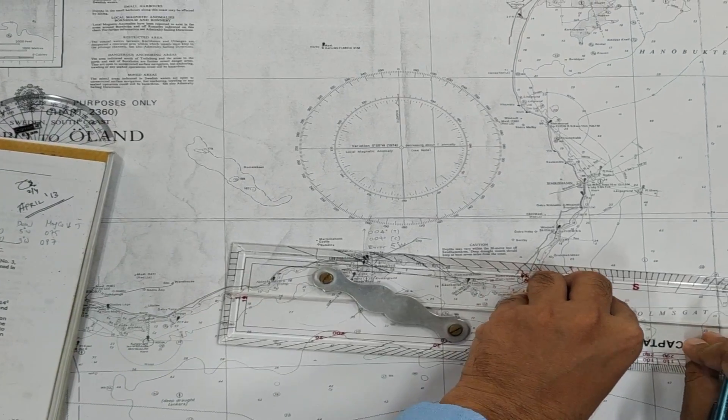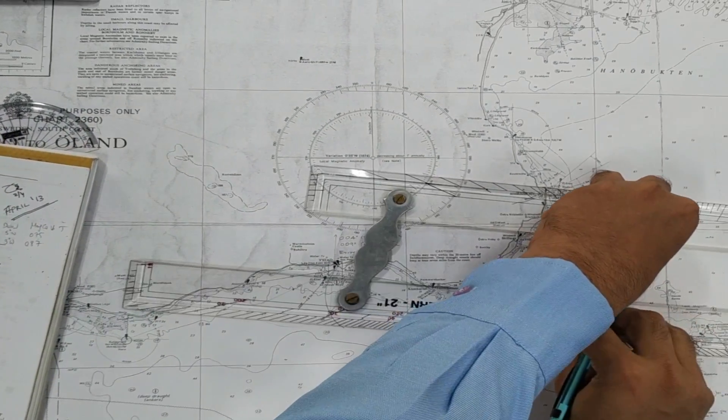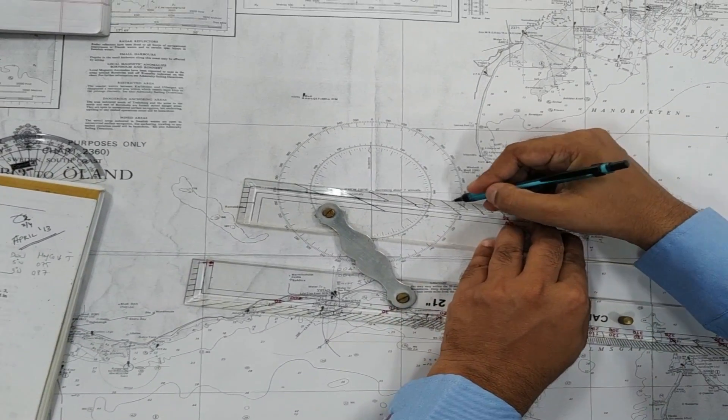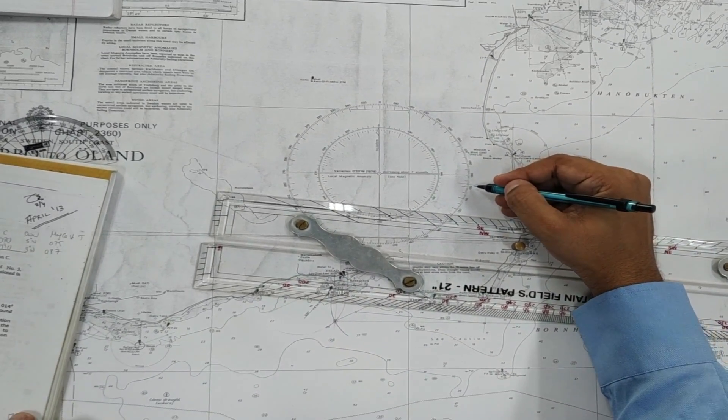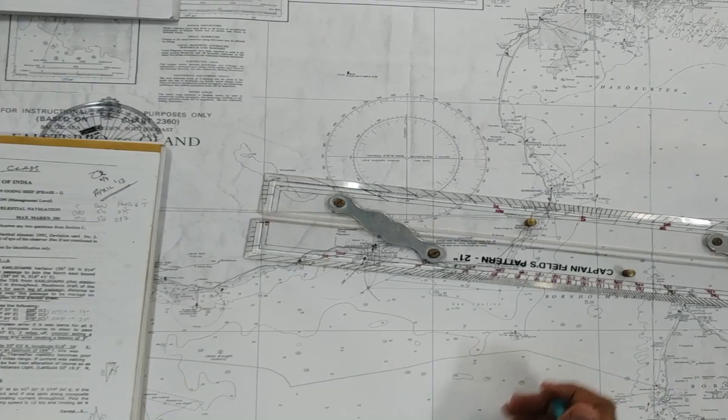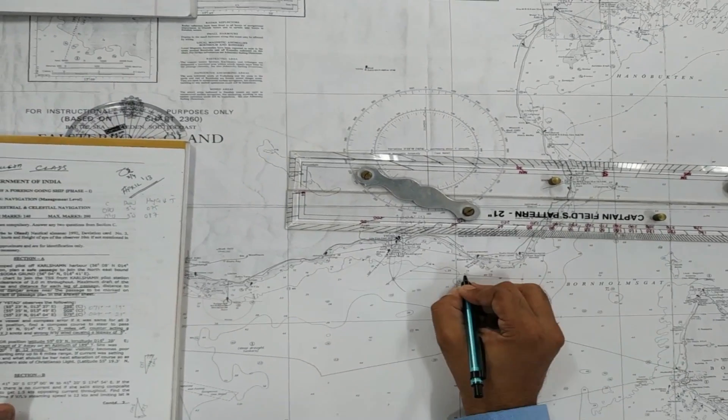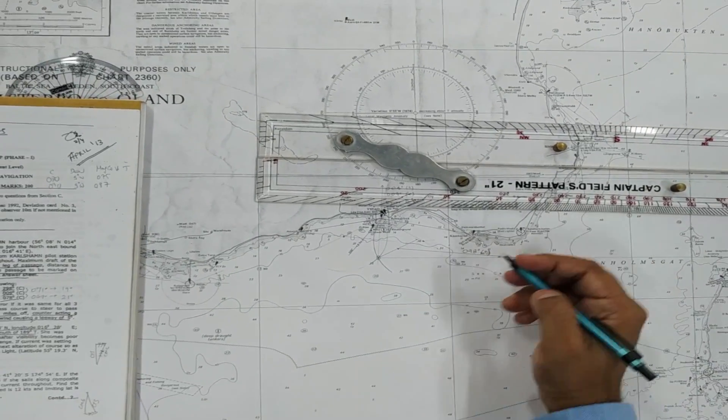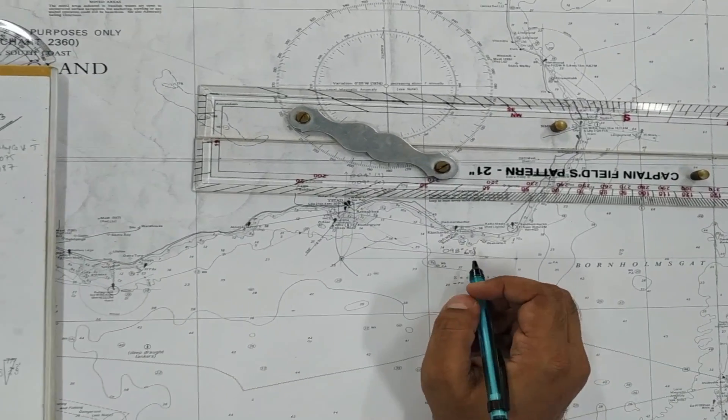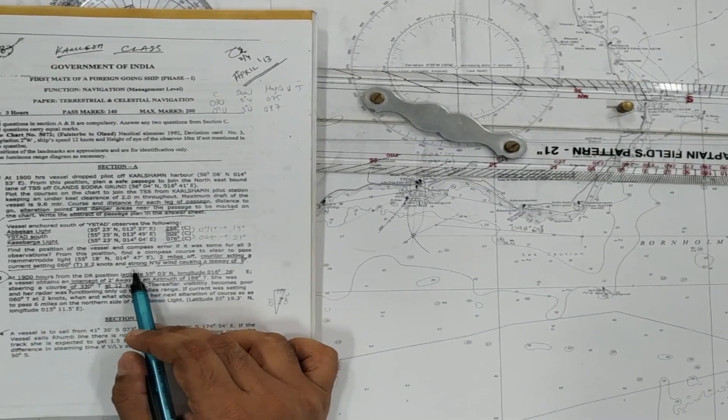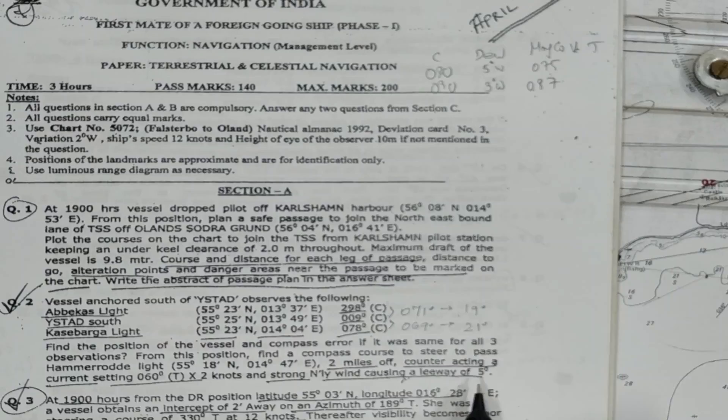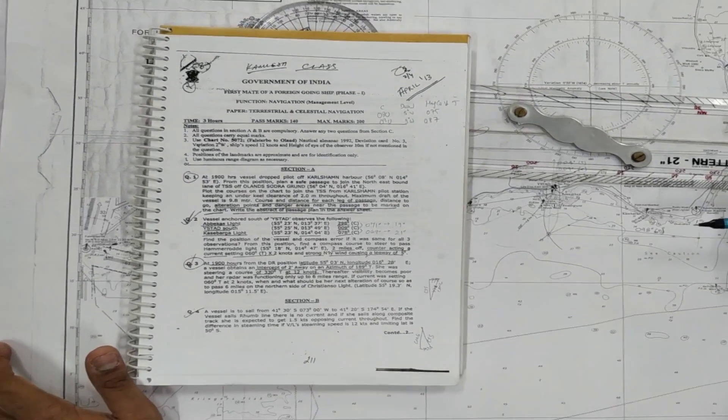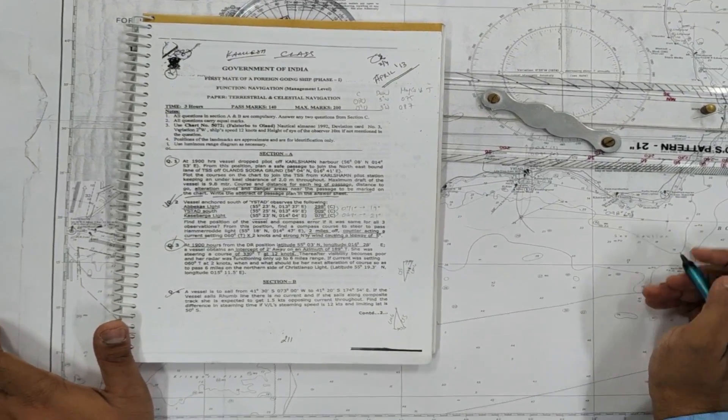Now we go back to our course to steer: 098 degrees true. That means we have to steer a course of 098 degrees true. Remember, we are still in true. So this is the course to steer. But now our question also says we have a strong northerly wind causing a leeway of 5 degrees. That means we have a wind from the north and pushing the ship towards the south. To counter that, we have to give a leeway of 5 degrees. So the 098 degrees is a true course to steer.